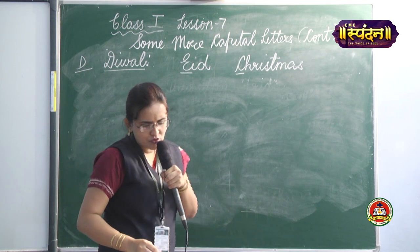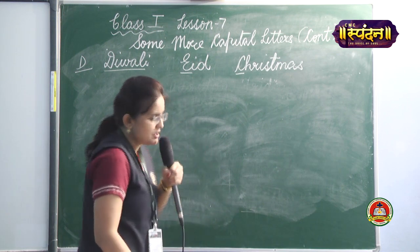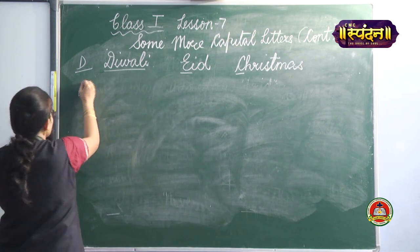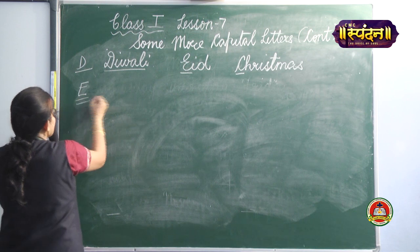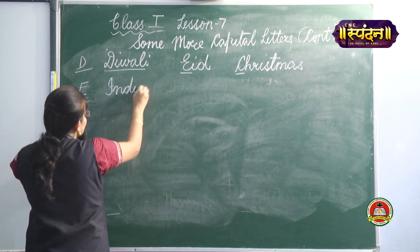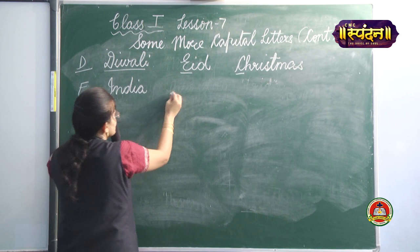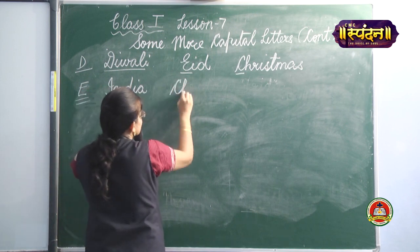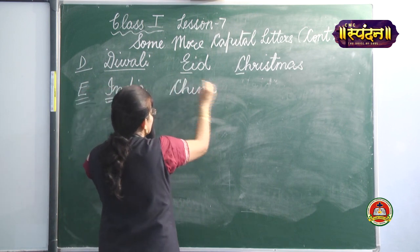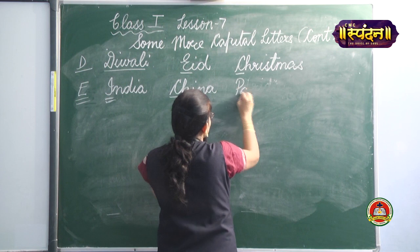Then moving on to Exercise E: Write the names of three countries. So here you can write India, then you can write China, then you can write Pakistan.